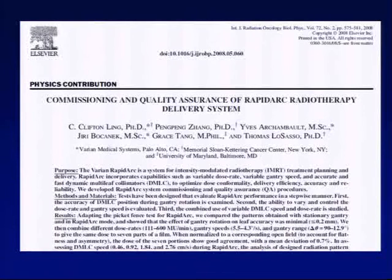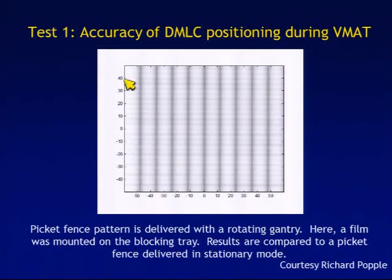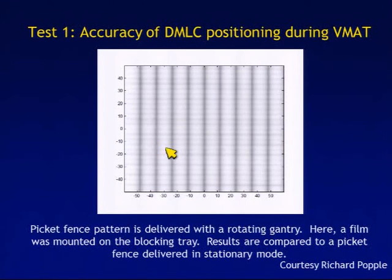The most commonly referenced document is a paper from Cliff Ling and colleagues at Memorial Sloan Kettering, entitled Commissioning and Quality Assurance of a RapidArc Radiotherapy System. The first recommended basic test is testing the accuracy of the dynamic multi-leaf collimator motion positioning during VMAT. A picket fence pattern is delivered with a rotating gantry, with film mounted in the blocking tray, and the results are compared to a picket fence delivered in stationary mode. If the system is performing well, you'll see the same picket fence pattern regardless of whether it's delivered stationary or rotationally.